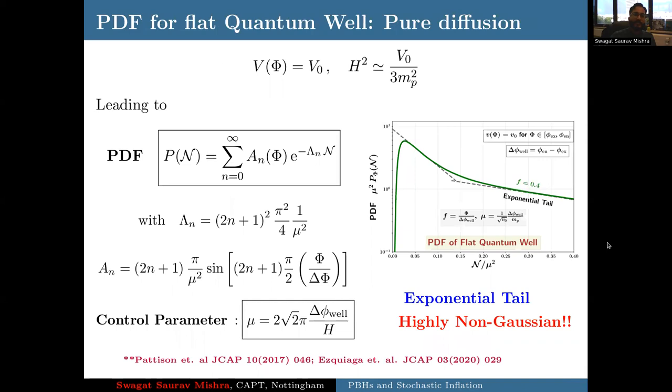For example, in this particular set of work, a very flat potential was taken. For this flat potential with de Sitter noise, it turns out that the probability distribution of number of e-folds is Gaussian near the mean, but the tail is actually exponential. So you get a highly non-Gaussian tail. The whole behavior is governed by a control parameter which has to do with how high your feature is and how wide is this flat feature.